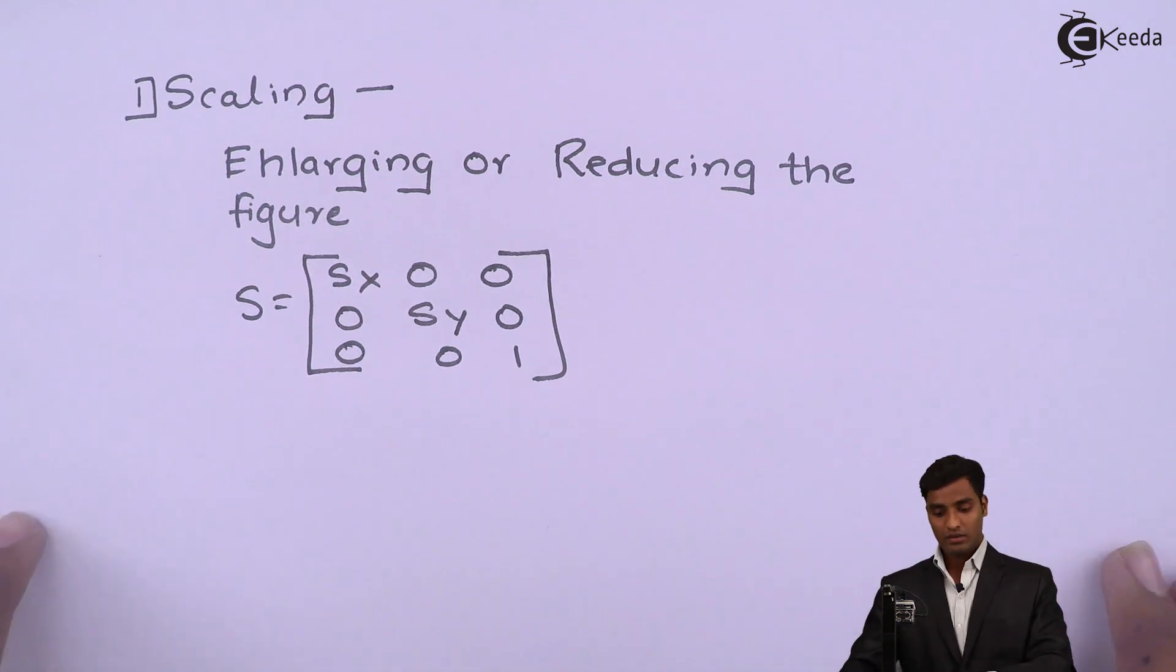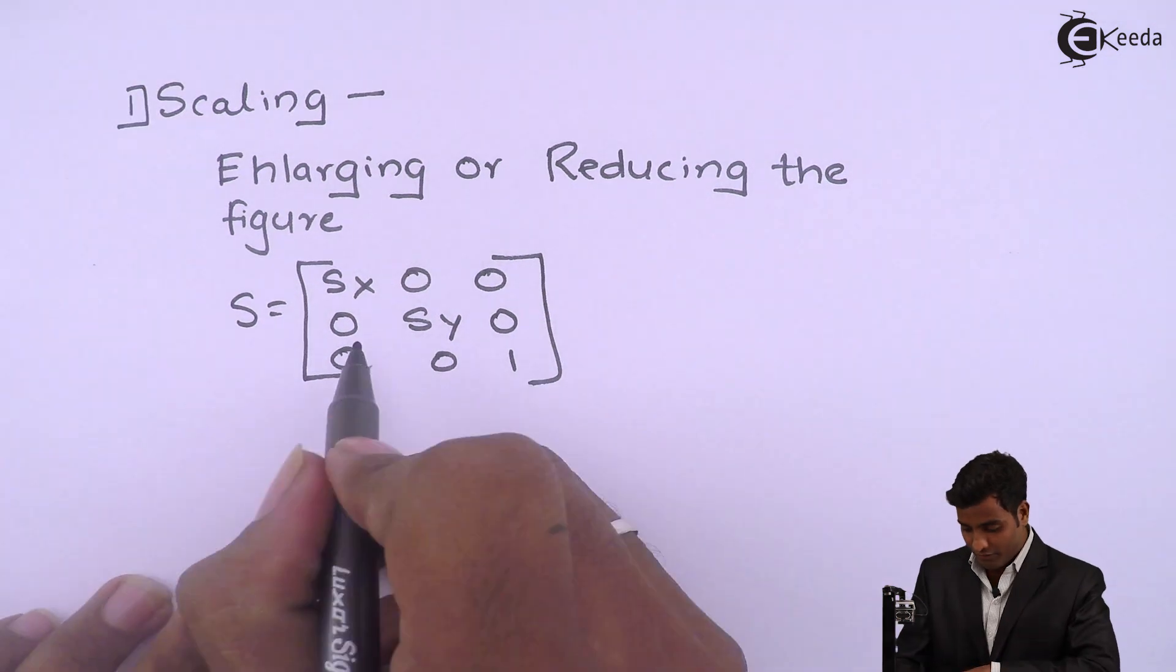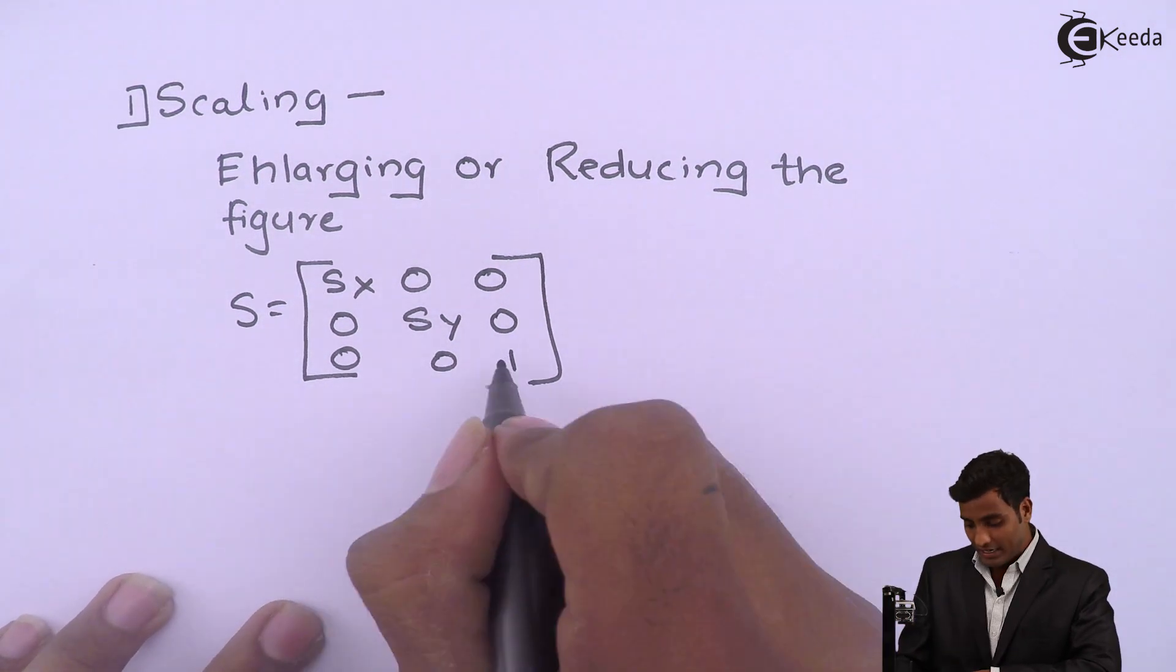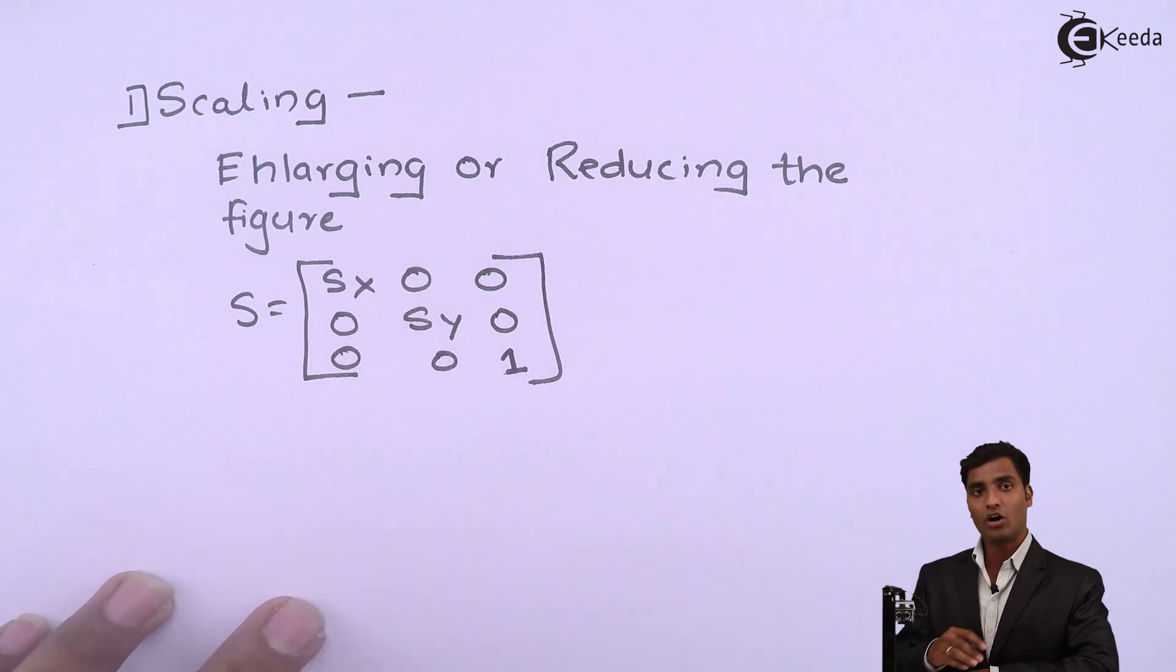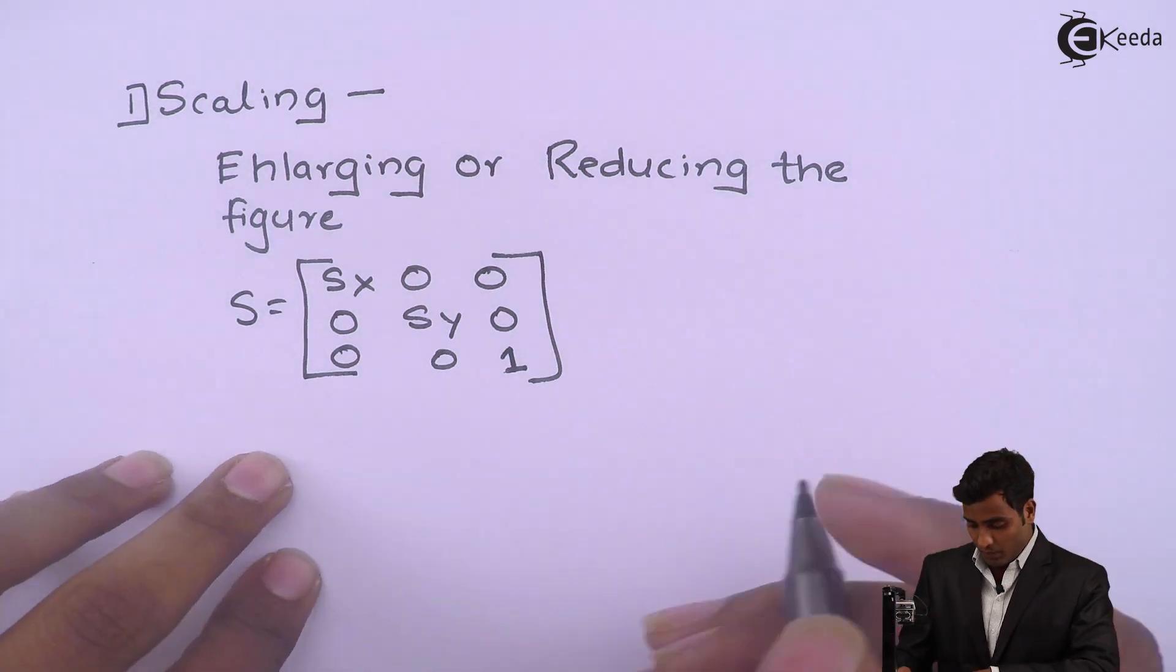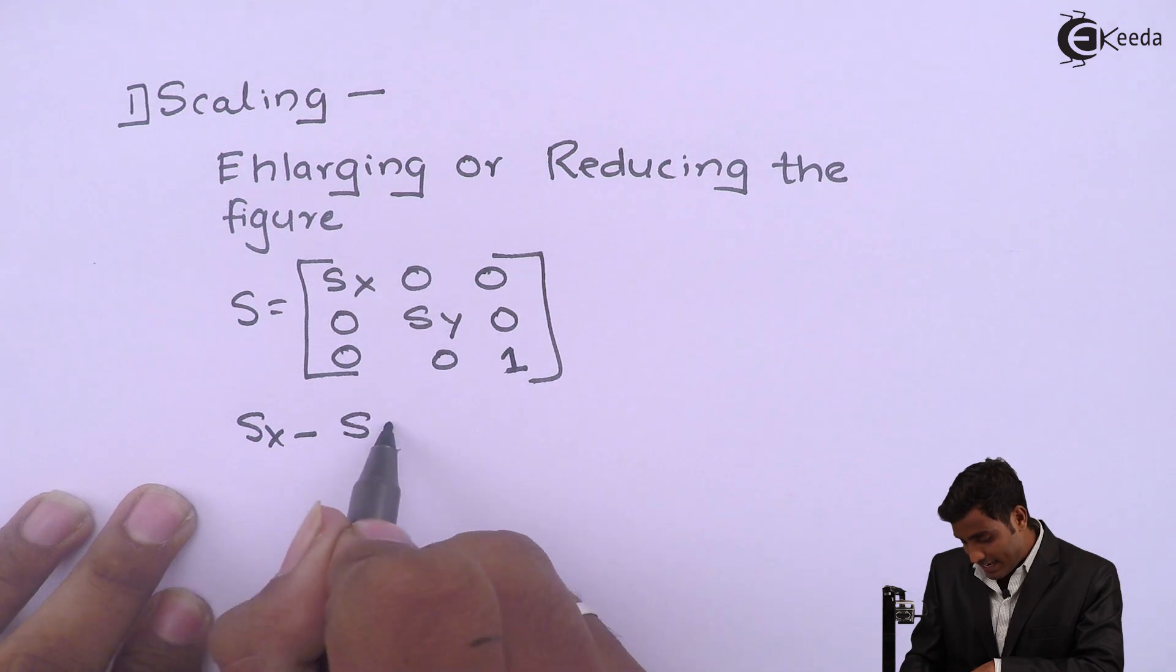But we don't have to replace in last row and last column because it is an identity matrix in all transformation. The last one last column is always one. So Sx means scaling along x direction.